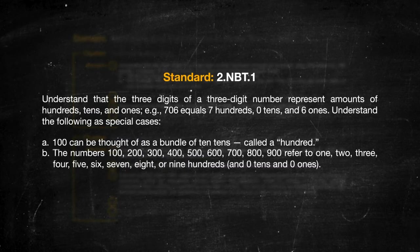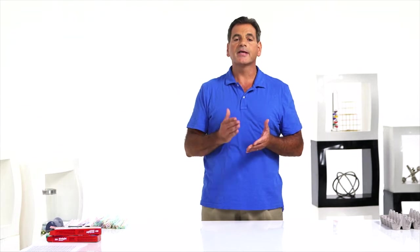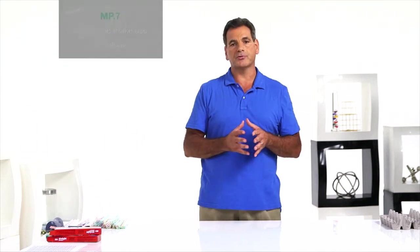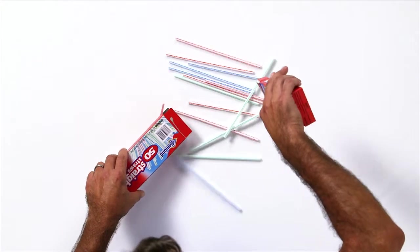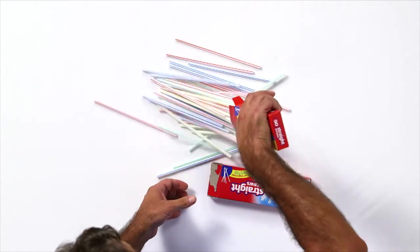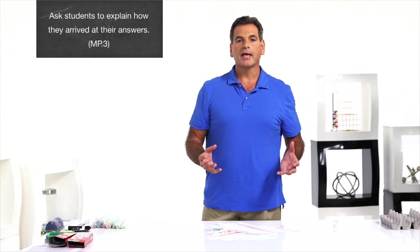Let's get started with standard 2.NBT.1. In this standard, students are going to extend their understanding of place value to include the hundreds place. The key concept here is to know that 10 tens is the same as 100. Here's a fantastic activity to introduce this topic. Give pairs of students a pile of straws, but strategically make it somewhere between 111 and 119. And then without any further instruction, ask the students to count them.